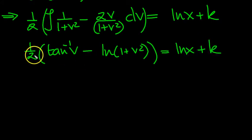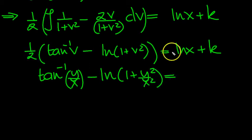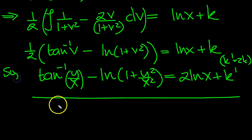So let's expand. Let's move that 2 from times to divide and just write down the answer now. So tan to the minus 1, y over x minus ln 1 plus, and the v squared we can write as y squared over x squared, is equal to 2 ln x plus 2k, which we can label as k dashed as the arbitrary constant now. That's the answer in implicit form.